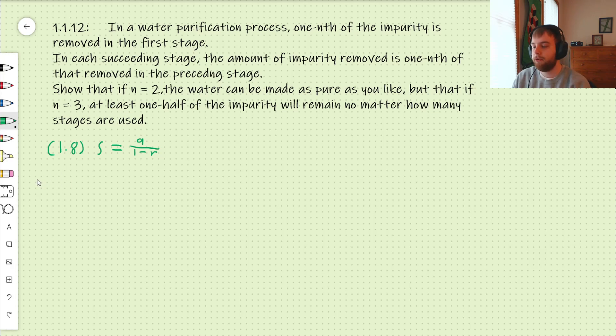So, first of all, we're going to be keeping track of how much we've removed at each step, and we're going to go with n equals 2 first. So, if n equals 2, you're removing 1 half at the first stage, and then you're removing a half of a half.